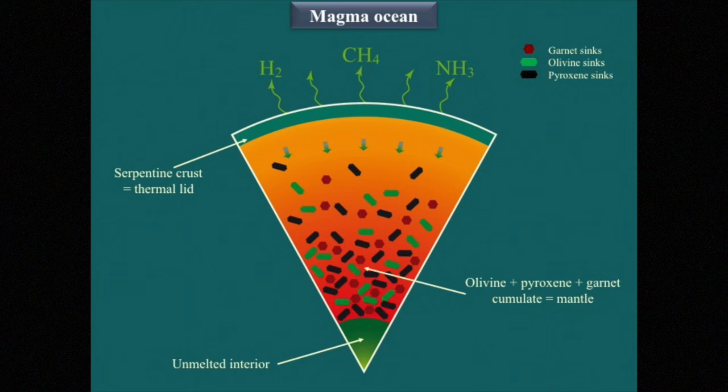One of the problems on Earth, as I have told you, is that it is not possible to crystallize huge amounts of plagioclase. Instead of plagioclase, on Earth the mineral that crystallized was garnet — a very heavy mineral that also sinks in the mantle. So on Earth, the crystallization was of pyroxene, olivine, and garnet, and all these minerals sank to the bottom of the magma ocean.